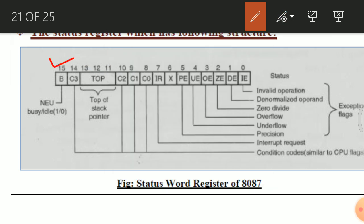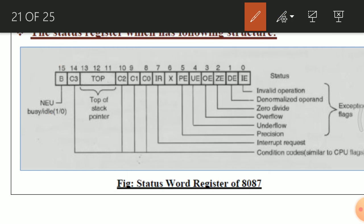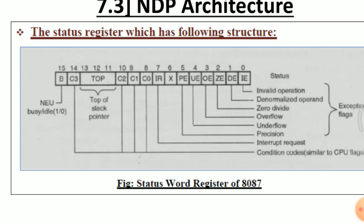The most significant bit, bit 15, is the B bit — the busy bit. It indicates whether the Numeric Execution Unit of 8087 NDP is busy performing a mathematical operation. If bit 15 is set (1), the 8087 is busy. If it is zero, the 8087 is idle and not performing any mathematical operation. This status register gives the overall working status of the 8087.